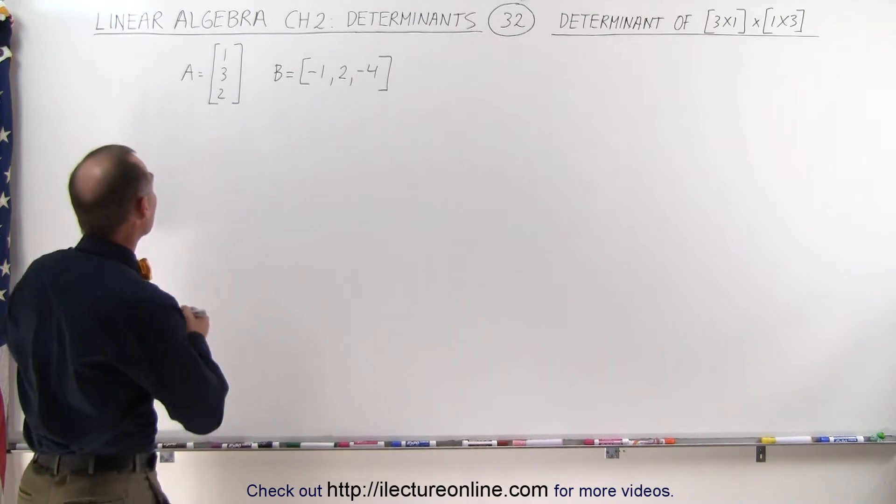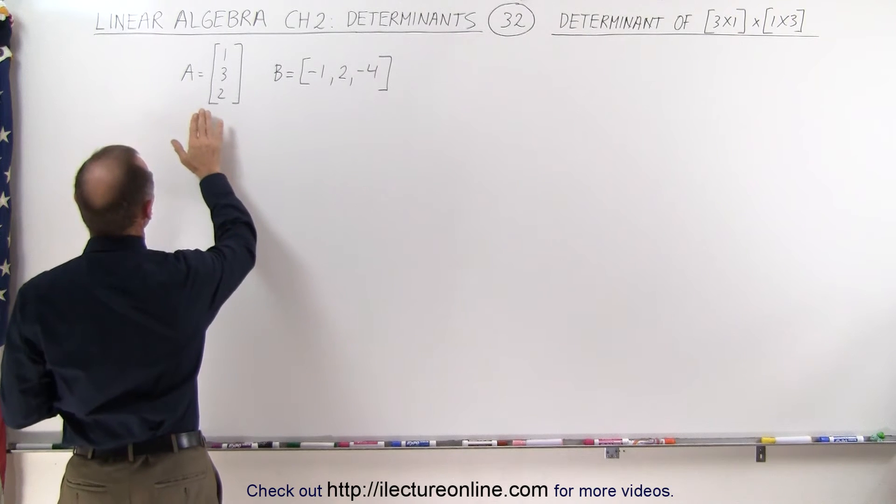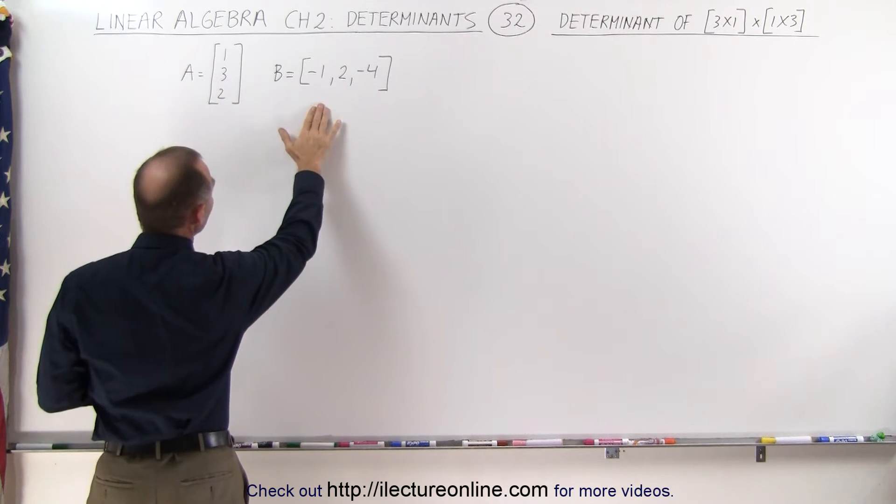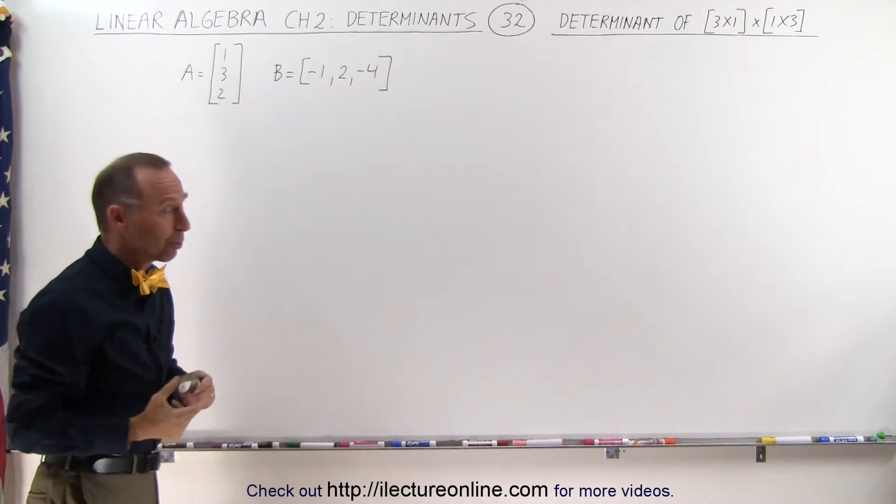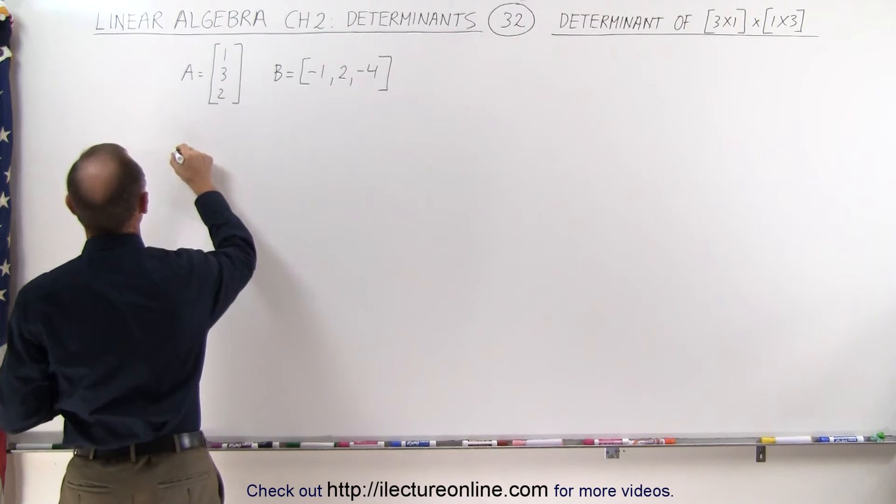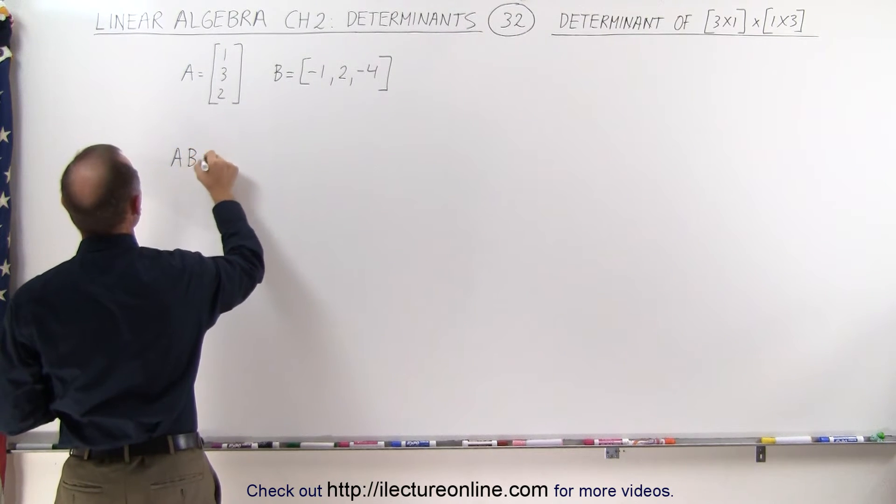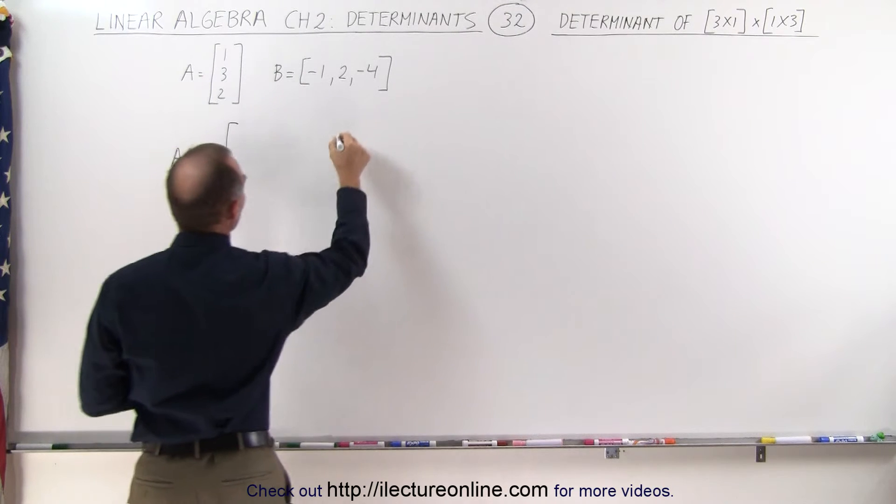First let's multiply the two matrices together. When you multiply 3 by 1 with a 1 by 3 you will get a 3 by 3 matrix. So A multiplied times B is equal to and that will give you a 3 by 3 matrix.